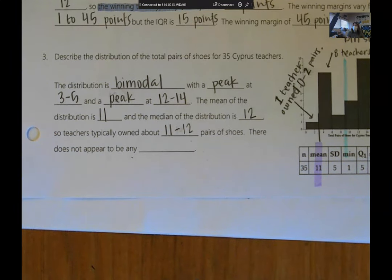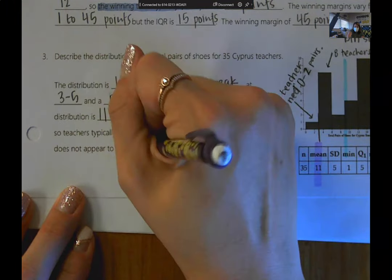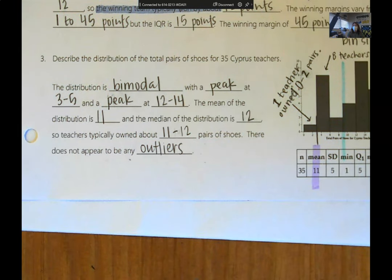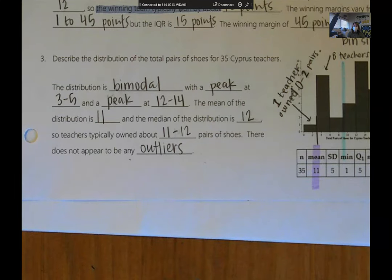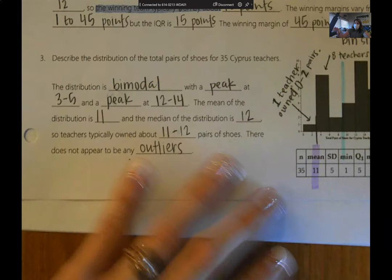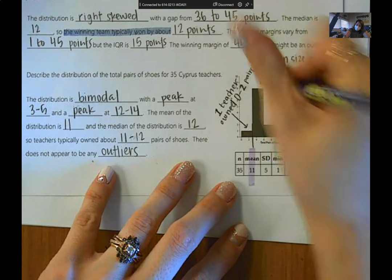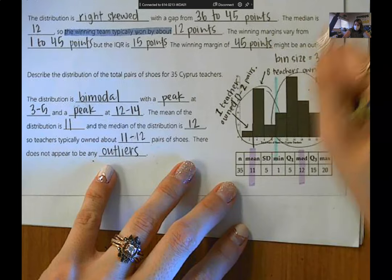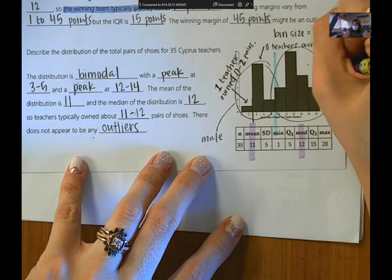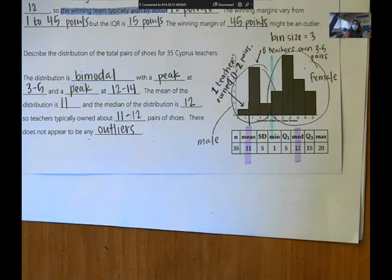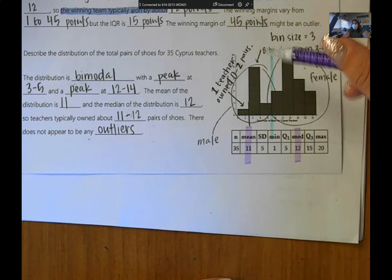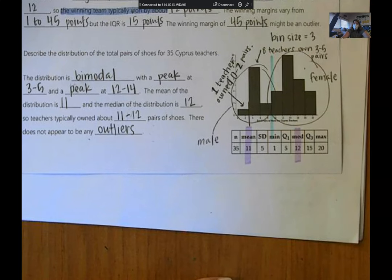Do you think there are any outliers? No — there do not appear to be any outliers. One other thing I want to highlight: I personally think this bimodal shape reflects two groups — probably the male teachers owned far fewer shoes, and this second peak is probably the female teachers. I think your generation it's probably pretty close, since sneakers are a much bigger deal now than they were.